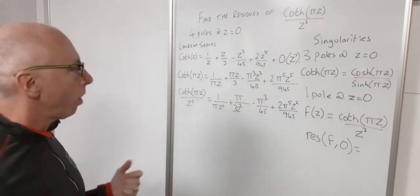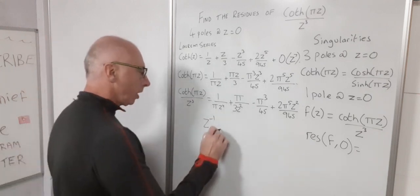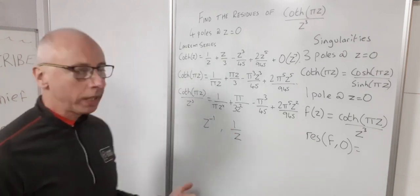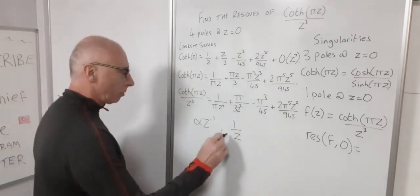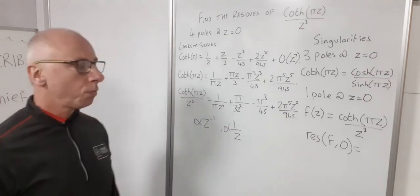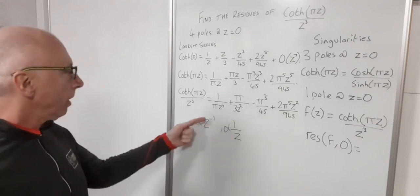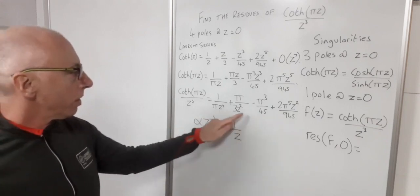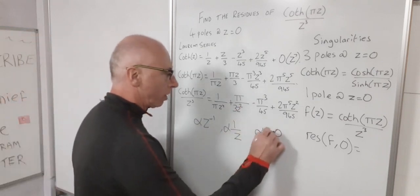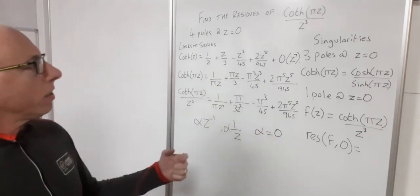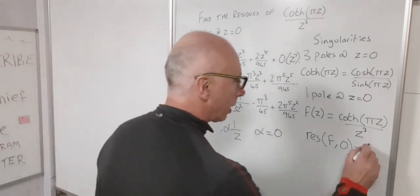Okay and again all these terms will just keep going on. Now when we're dealing with a Laurent series what we're interested in is the z to the minus 1 term or the 1 over z term, whichever way you want to look at it. And the main part is the coefficient which we'll call alpha that goes with that term. This term alpha will give us our residue. Now looking at our Laurent series there is no 1 over z term. So therefore our alpha equals zero. So therefore by this our residue of our function at zero is just zero.